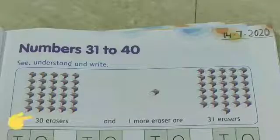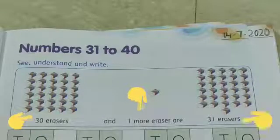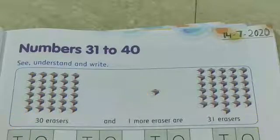So children, 30 erasers and one more eraser are 31 erasers.